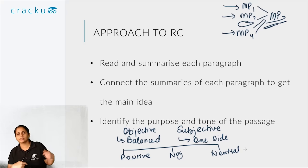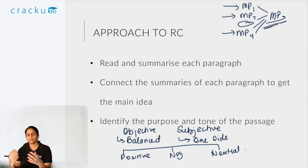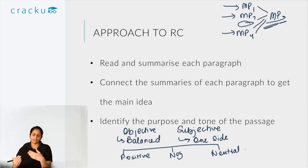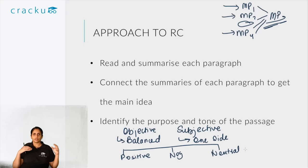If it is objective and positive, the author has considered both sides and appreciated something overall. It can also be balanced and negative, or neutral — where the author quotes people without giving a personal opinion, as in a news report or editorial. When the tone is neutral, any option suggesting the author is trying to drive home a particular view can be directly eliminated. These things — purpose, main idea, and tone — are guides for you to eliminate options that do not match them.